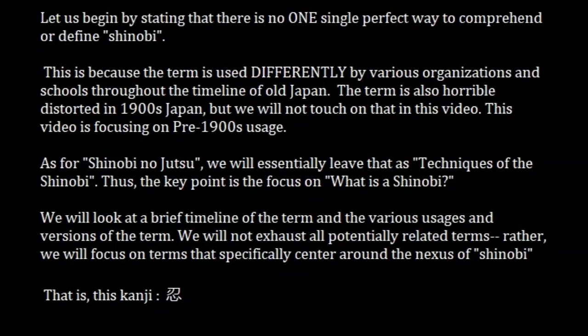As far as Shinobi no Jutsu goes, we're just going to say that is the techniques of Shinobi and leave it at that for this video. We'll look at a brief timeline and various usages and versions of the term. This will not exhaust all the potentially related terms — we're just going to focus on terms that specifically center around the nexus of Shinobi, which is the kanji we all know: the blade over the heart, the famous kanji. There are lots of terms in old samurai warfare for things similar to Shinobi, but we're only going to touch on the ones that are rooted in this kanji.